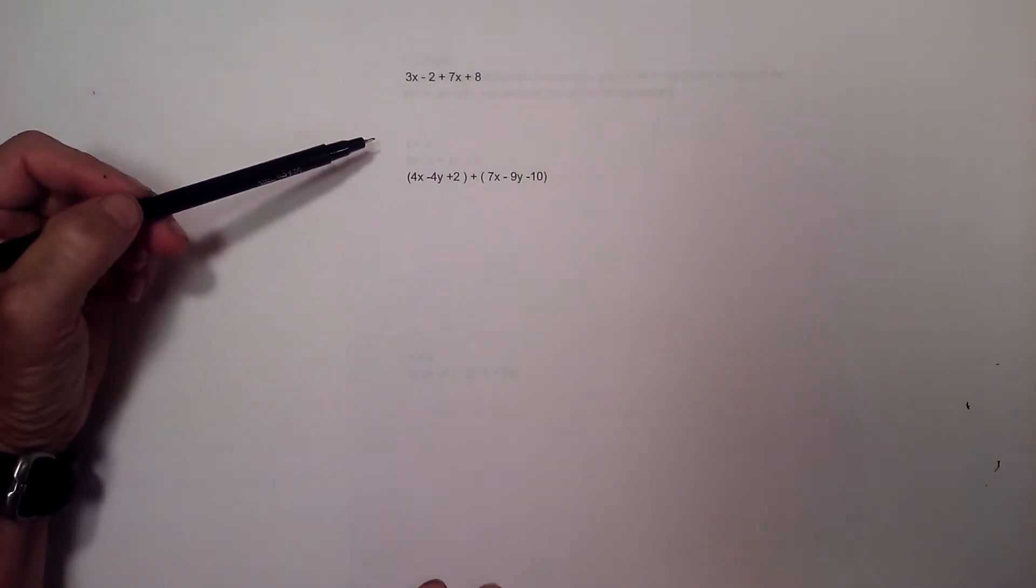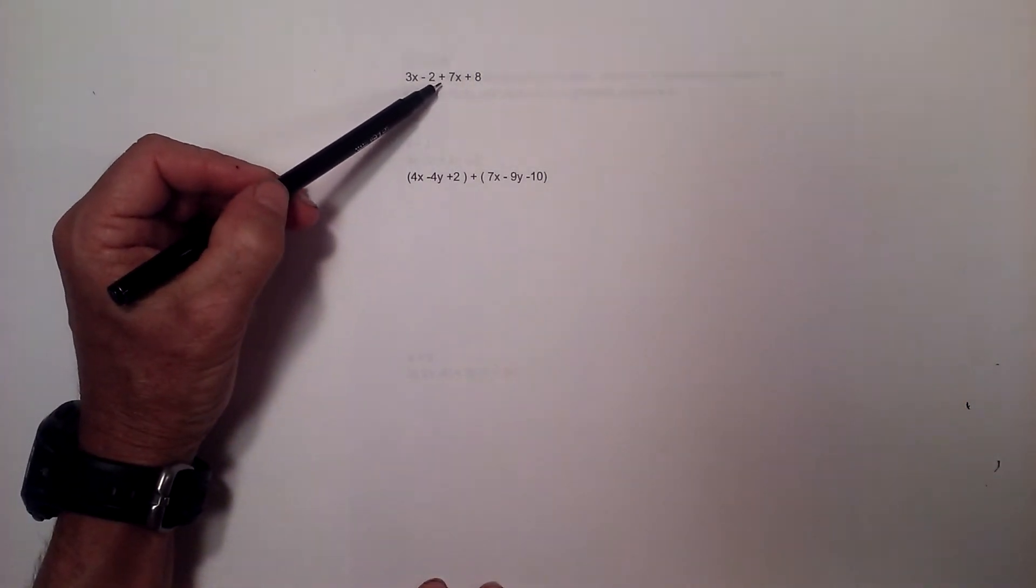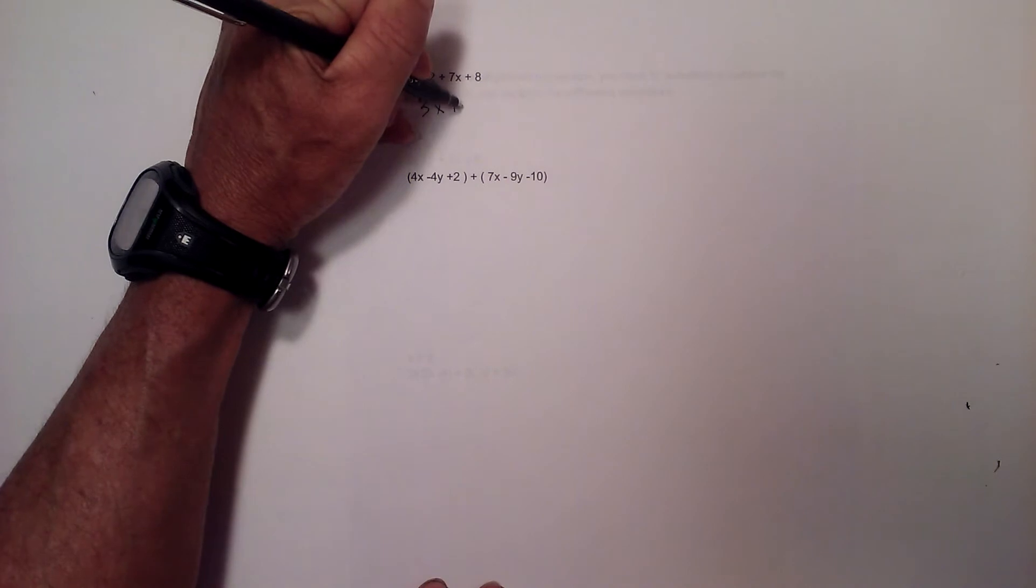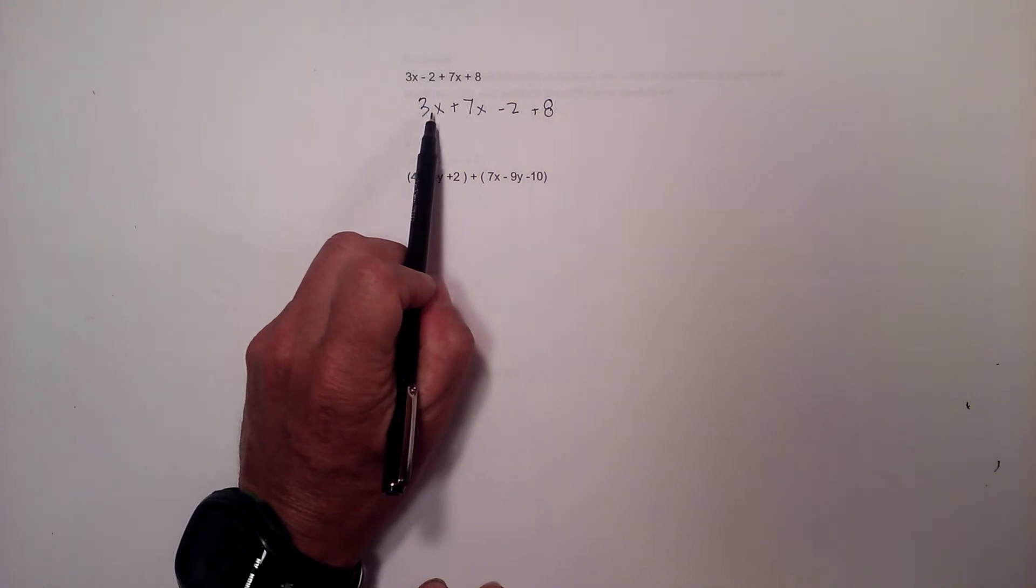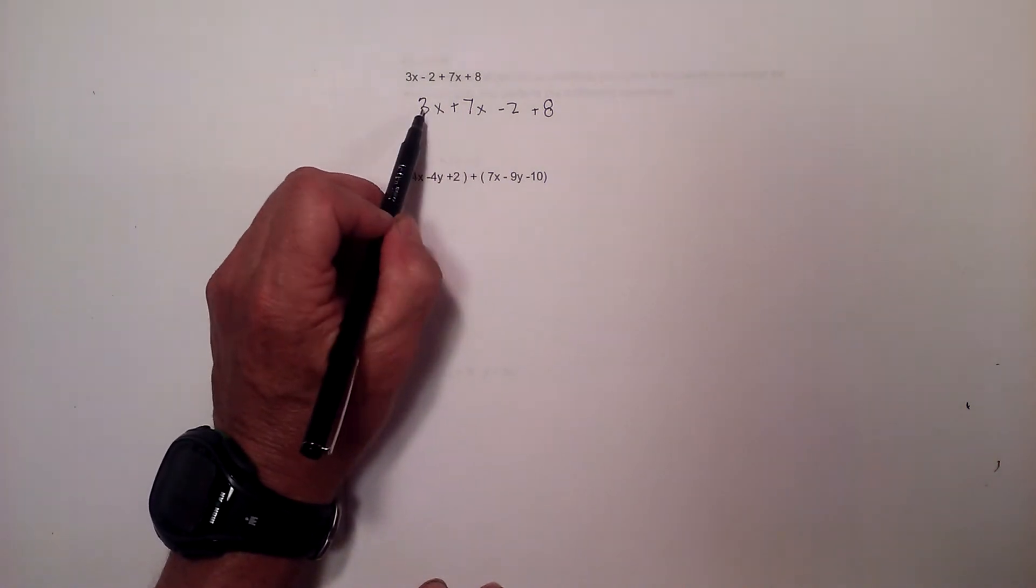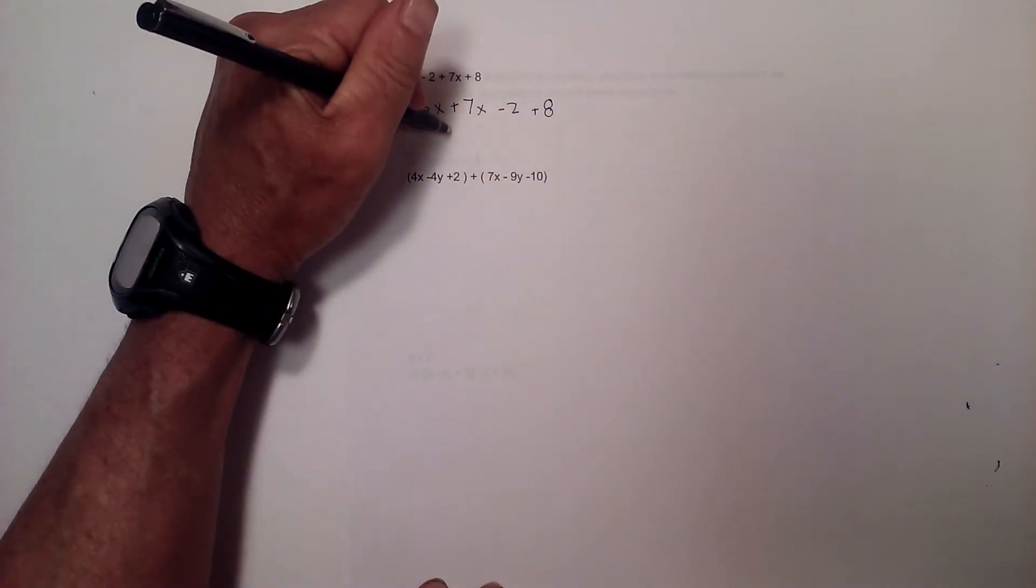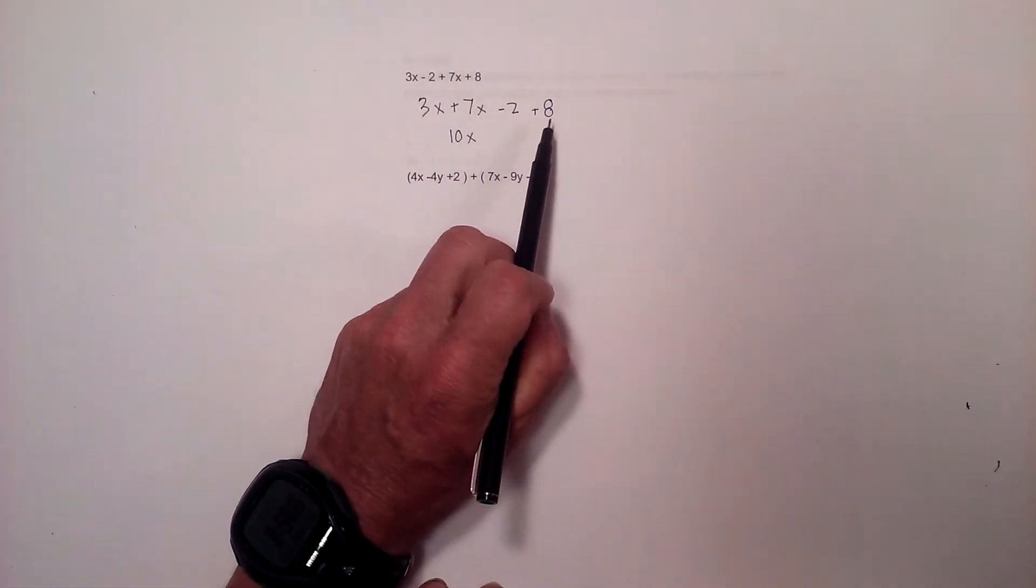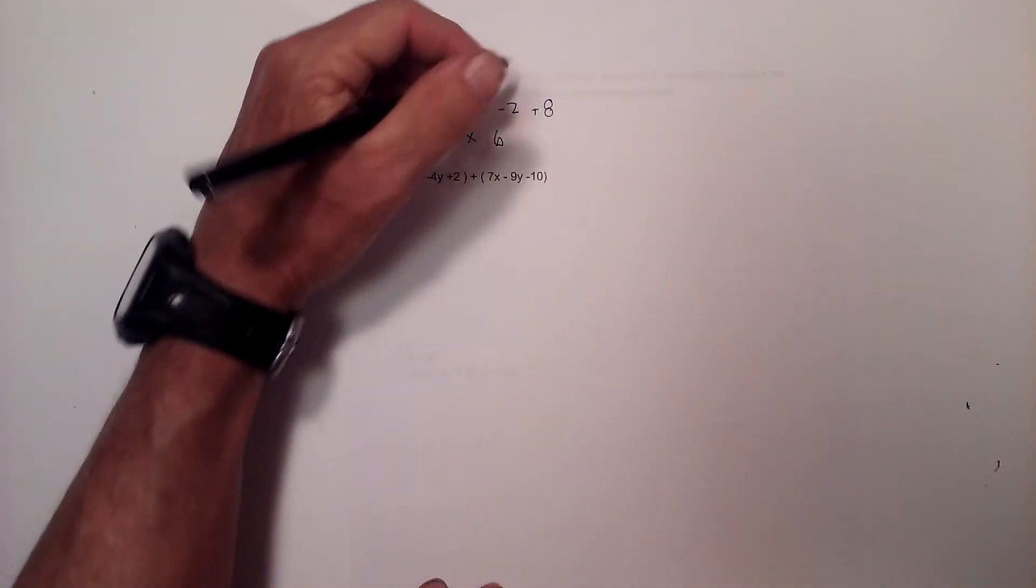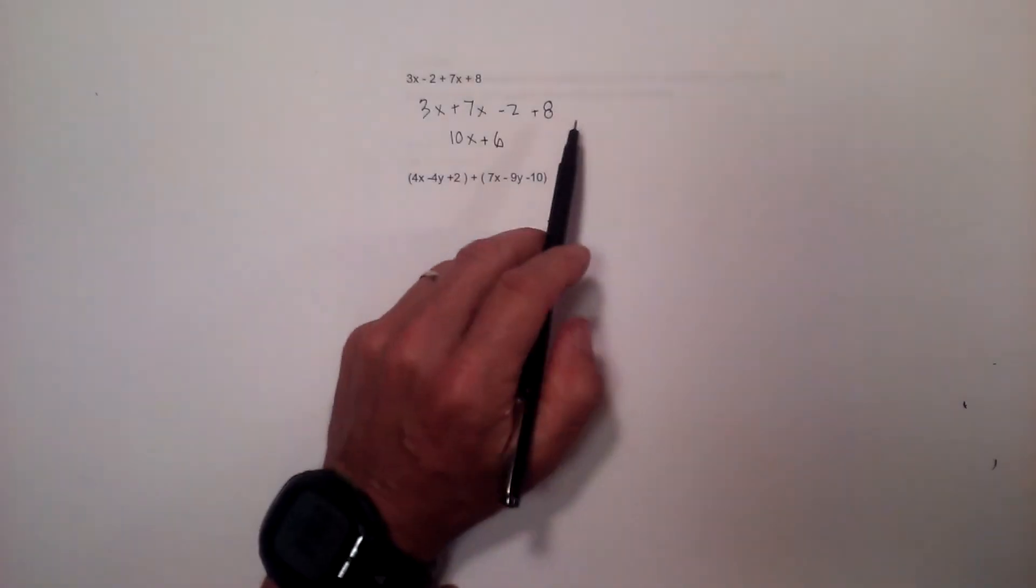We have the original problem: 3x - 2 + 7x + 8. I'm going to rewrite it and put like terms next to each other, so now I have 3x + 7x - 2 + 8. I will combine the like terms: 3 and 7 gives us 10x. For the constants, the signs are different, so I take the difference between 8 and 2, which is 6. It will be positive because 8 is larger than 2.